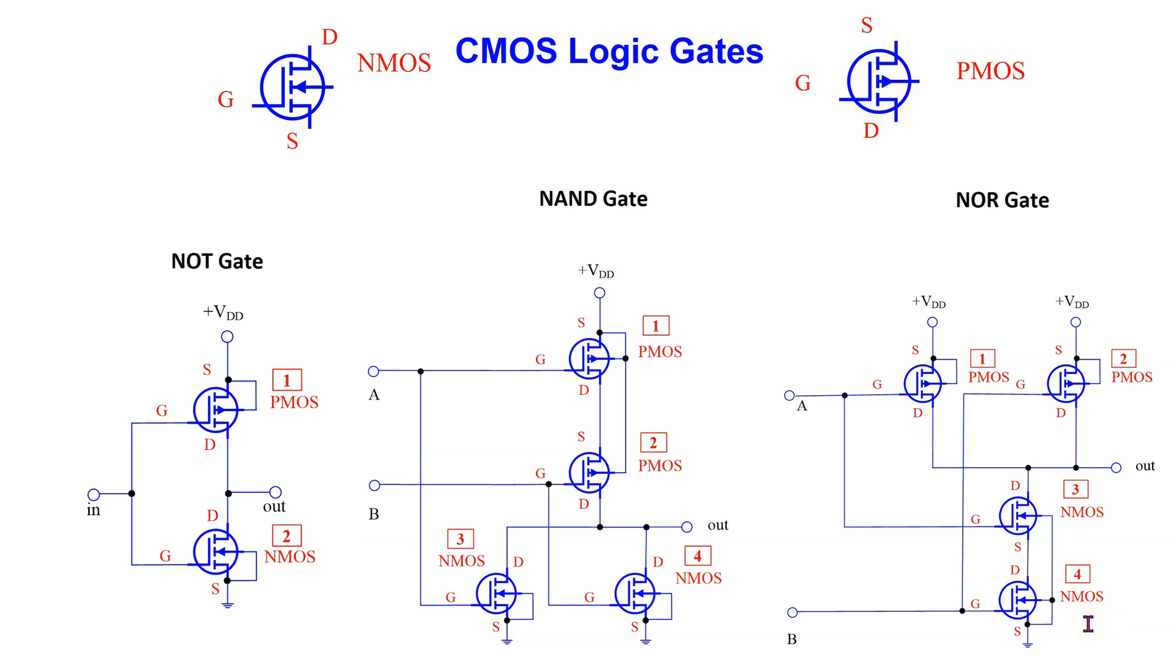By cascading a CMOS NAND gate and NOT gate, we can make a CMOS AND gate. Similarly, by cascading a CMOS NOR gate and NOT gate, we can make a CMOS OR gate.